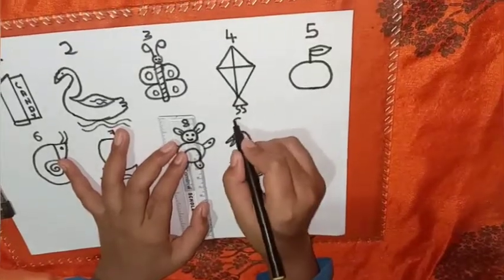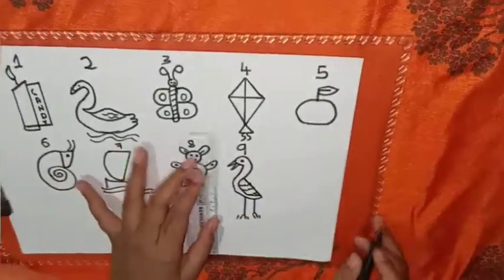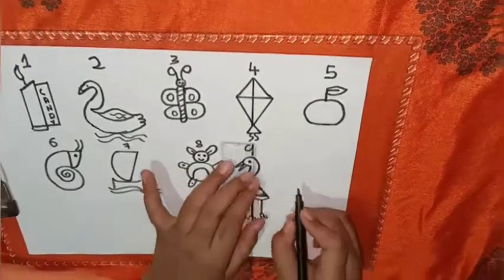Friends, this is a flamingo from number nine. Now comes the last number, number ten.